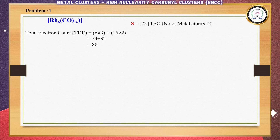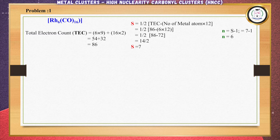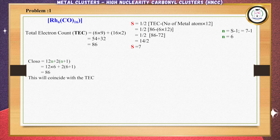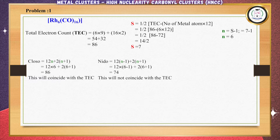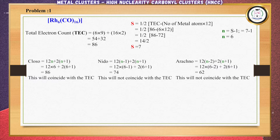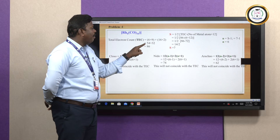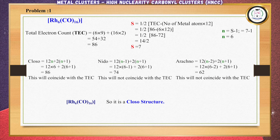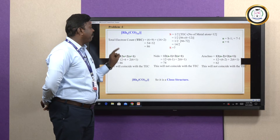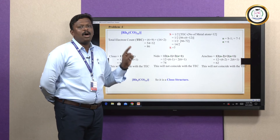The N value is S − 1 = 7 − 1 = 6. Now applying N = 6 into the Closo formula gives 86; into the Nido formula gives 74; and into the Arachno formula gives 62. Comparing the total electron count of 86 with these values, it coincides with Closo. So Rh6(CO)16 confirms the Closo structure. The N value of 6 represents the Closo octahedral structure.